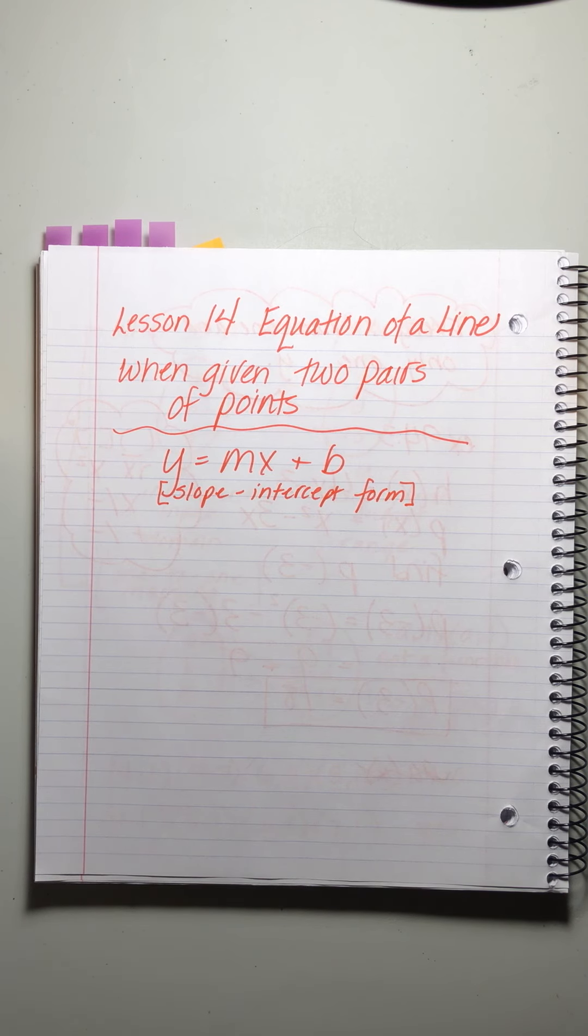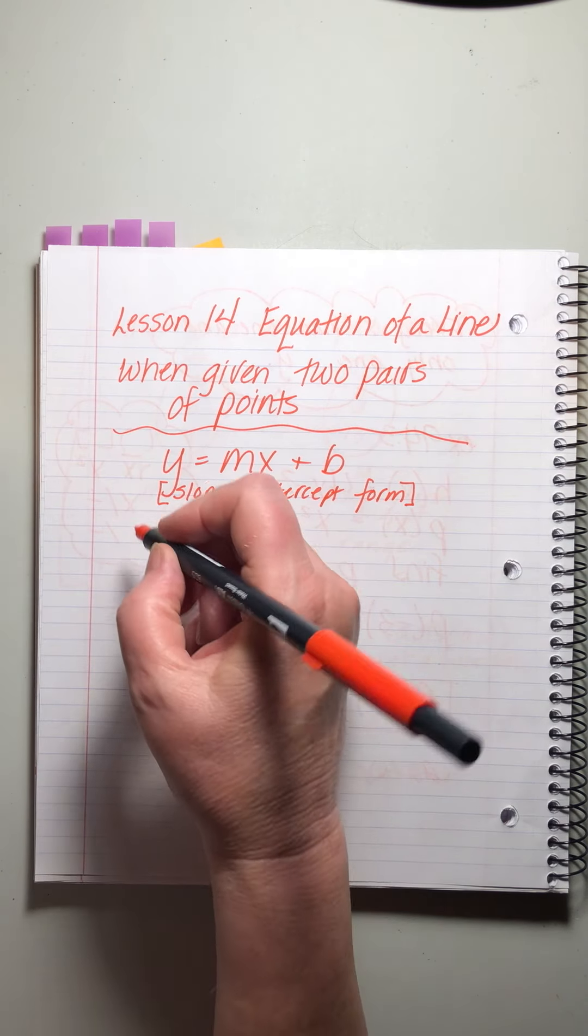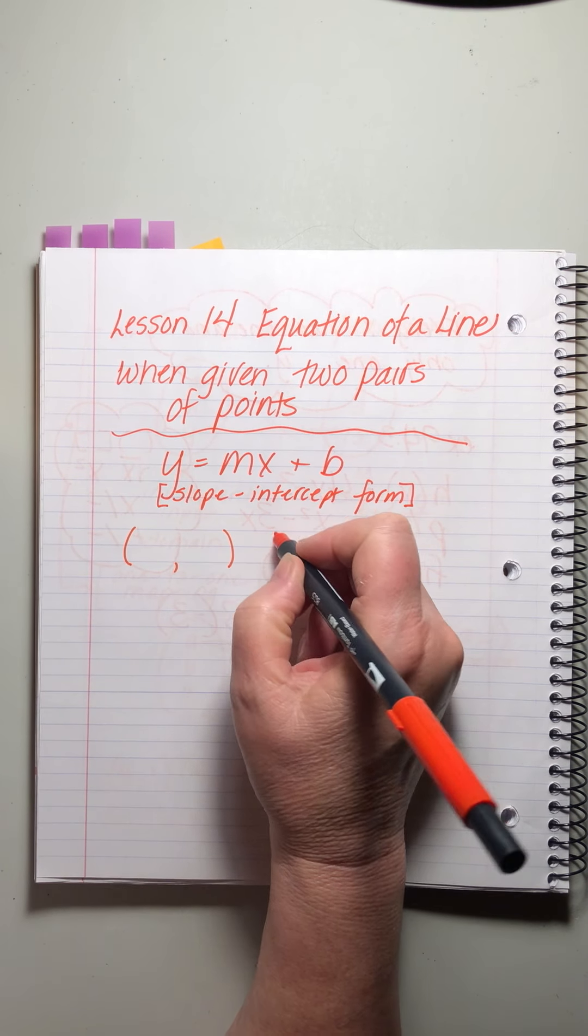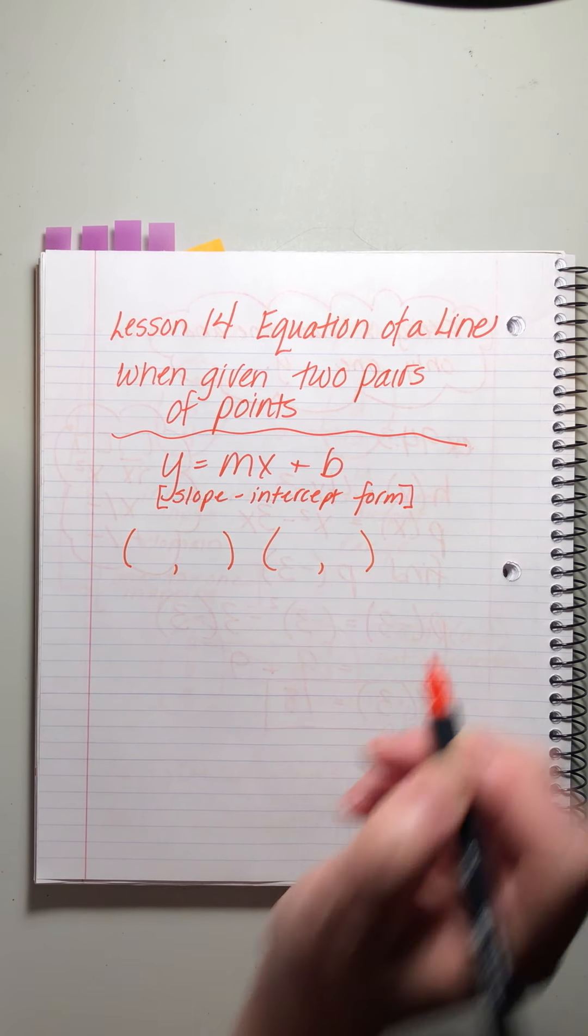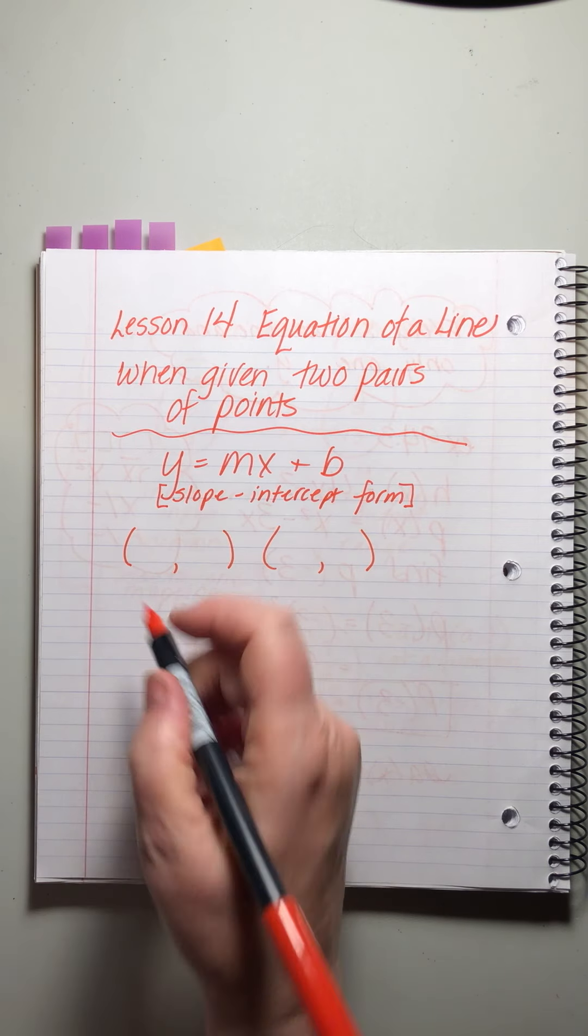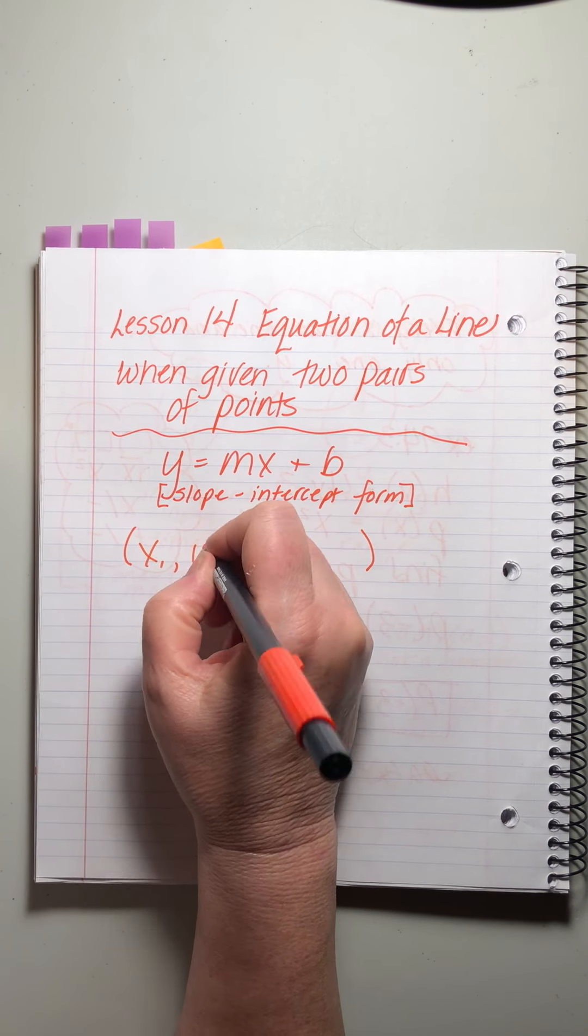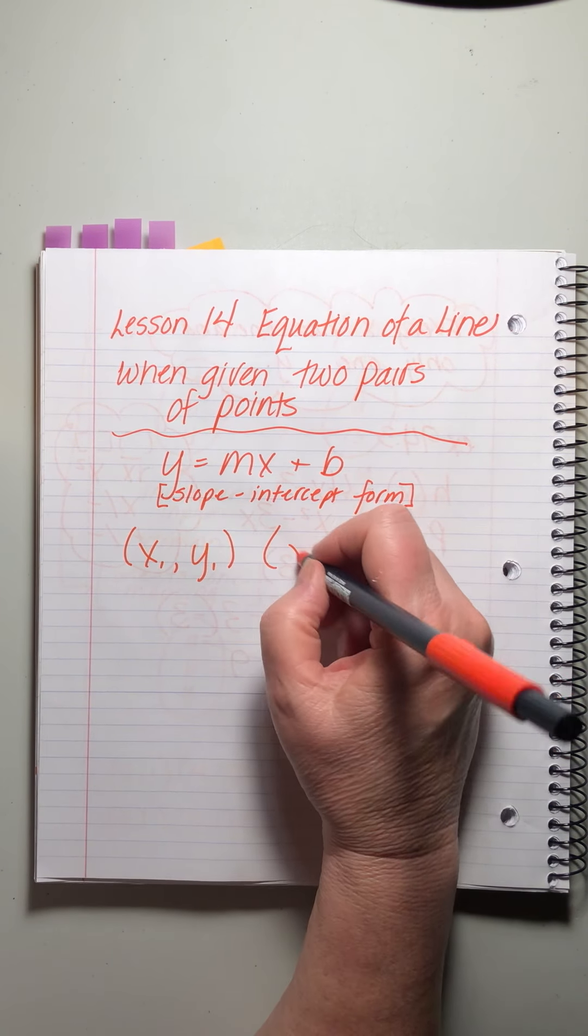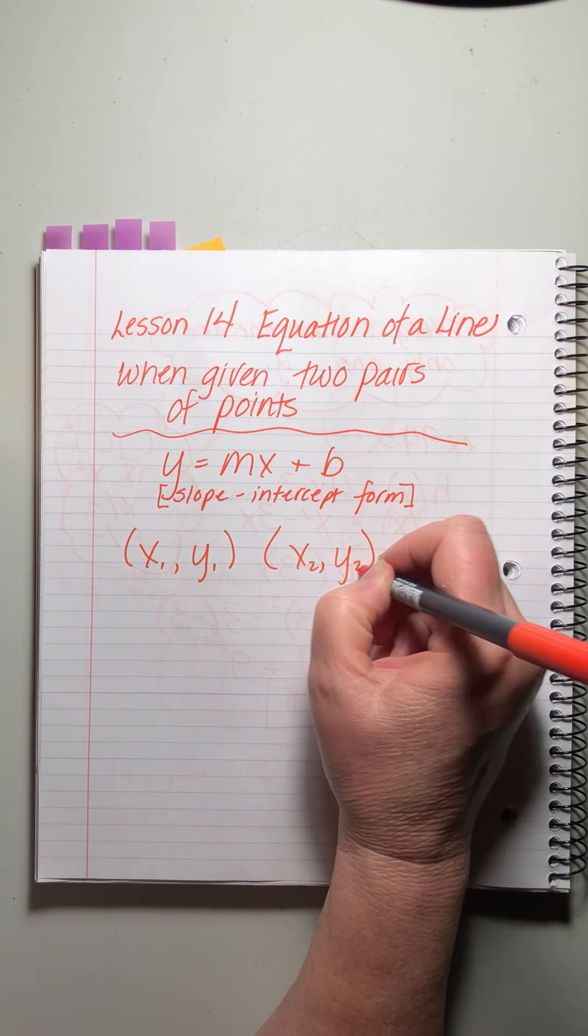Okay, so this type of problem is fun, because even though it's equation of a line, we don't have to graph a gosh darn thing. What we're always going to be given is two pairs of points that look like this, right? And we can write any numbers in there, but what we want to do is just think of them as x1 and y1, and x2 and y2.